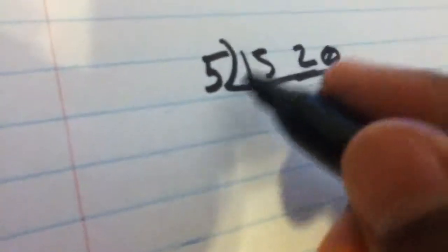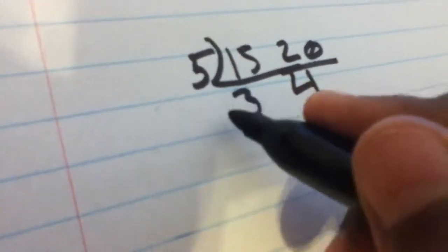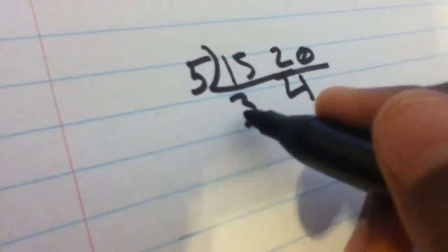15 and 20. Okay, again think of a number that can go into both. 5 can. 15 divided by 5 is 3, 20 divided by 5 is 4, and no other number can go into both, so you stop there.